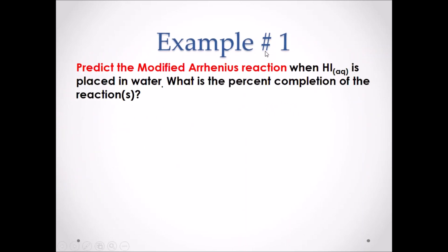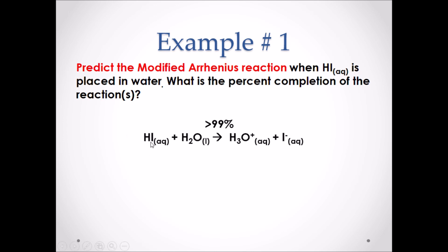Example number one: predict the modified Arrhenius reaction when HI is placed in water. What is the percent completion of the reactions? Hydroiodic acid is a strong acid, therefore it will react 100% in water — the products will be greater than 99%. There is also only one hydrogen in the chemical formula, so it is a monoprotic acid and can only react once. Acids transfer a hydrogen to water, forming H₃O⁺ and the anion I⁻.